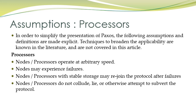Nodes or processors operate at arbitrary speed — nodes operate at different speeds. Nodes may experience failures in the distributed environment or blockchain. Nodes or processors with stable storage may rejoin the protocol after failures — nodes may recover and rejoin the network. Nodes or processors do not collude or otherwise attempt to subvert the protocol. These are the assumptions related to the processors.